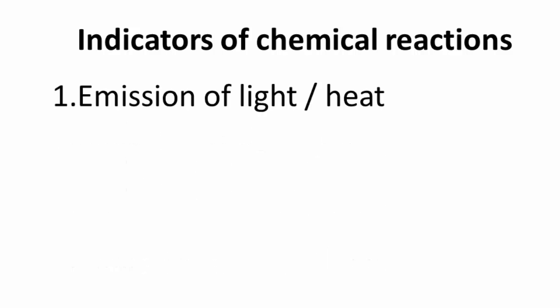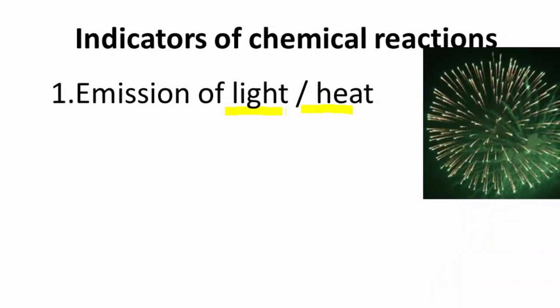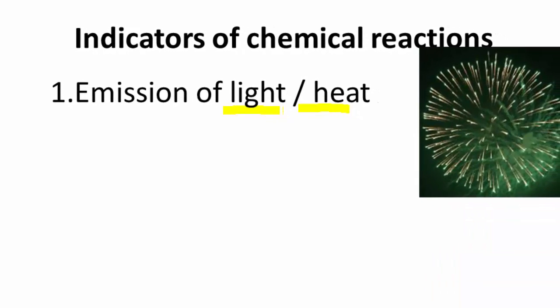First indicator of a chemical reaction is emission of light or heat. Now you're going to typically have this when you transfer electrons. So light or heat we'll think about as transferring electrons. For example, when you have fireworks, a lot of light and heat transferred in that. That's an indication of a chemical reaction.